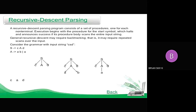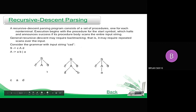This parsing technique recursively reparses the input to make a parse tree. For example, given the grammar with input string 'cad' and rules S → cAd, A → ab | a: starting from the start symbol, for A there are two options — ab and a. When taking ab, the match fails for this input string, so we backtrack and recursively try A → a. When A → a is used, the input matches. This is how recursive descent parsing works — left to right and top to bottom.